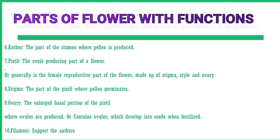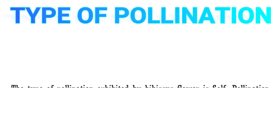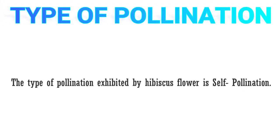Filament: supports the anthers. Hibiscus flower is the reproductive structure of the plant, so it undergoes pollination. Type of pollination exhibited by hibiscus flower: the type of pollination exhibited by hibiscus flower is self-pollination.